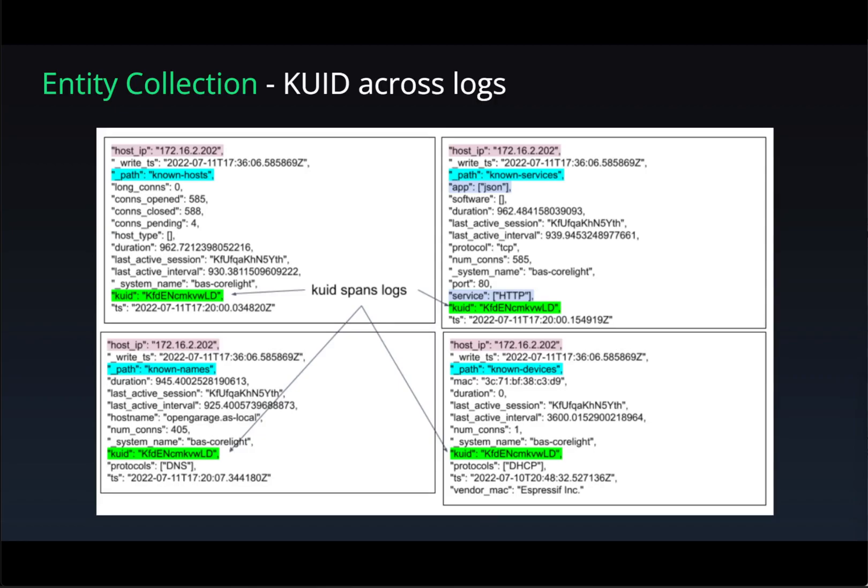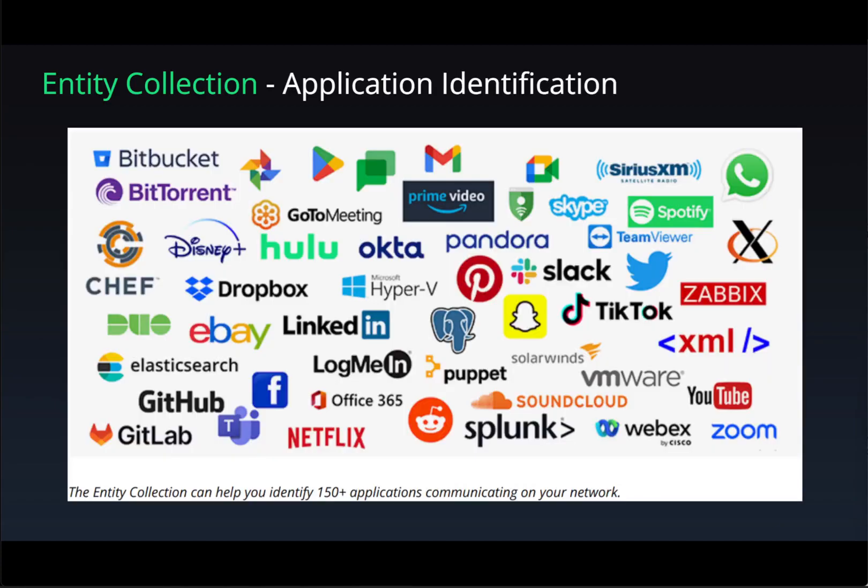Easily identifying the software applications running on a network provides helpful context to security analysts. Through various techniques — from DNS queries to certificate server name indication to protocol metadata — Corelite currently categorizes over 150 types of applications. A new field is written directly to the connection log for identified applications for easy correlation, and they are also fed into the known entity logs for further visibility.